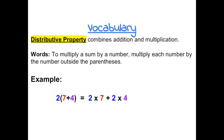The distributive property combines addition and multiplication. To multiply a sum by a number, multiply each number by the number outside the parentheses.